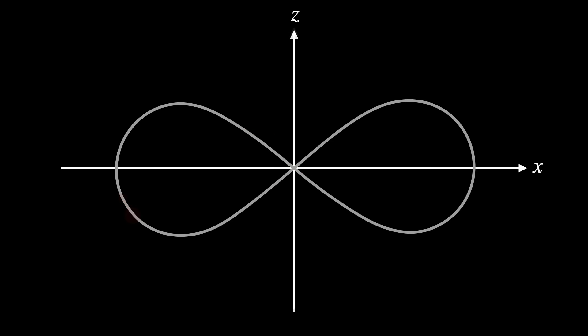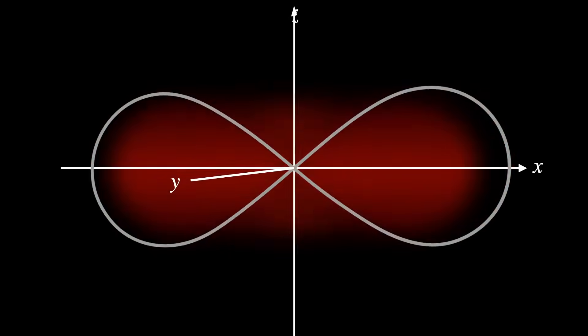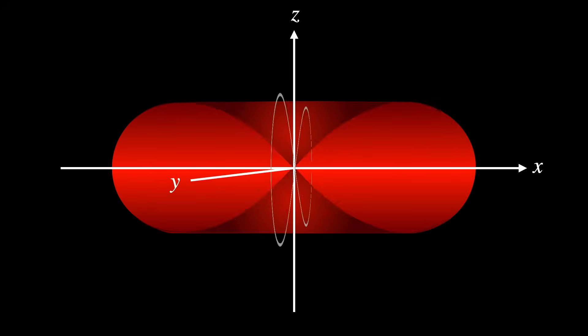The next step is to create a solid of revolution by introducing a third axis, denoted as Y, and rotating the figure 8 with respect to the Z-axis.